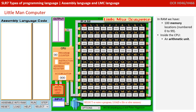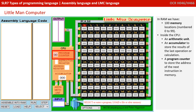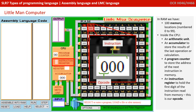Inside the CPU, we have an arithmetic logic unit. We have an accumulator to store the results of the last operation or calculation. We have a program counter to store the address of the next instruction in memory. And an actual instruction register to hold the first digit of the instruction read from memory — this is our opcode.